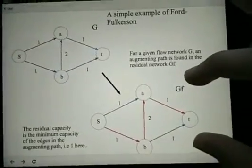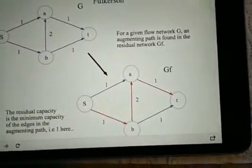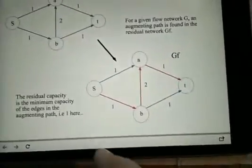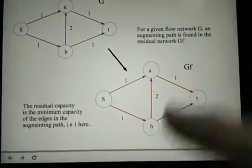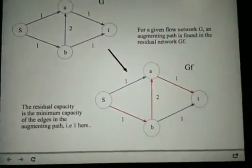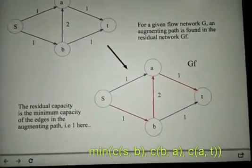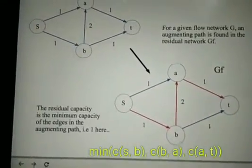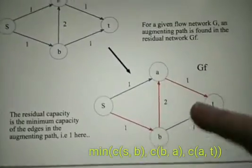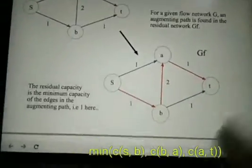The next step would be to find an augmenting path, which is any path from S to T in the network. For example, this path in red here. The next step would be to choose the minimum capacity of all the edges in your augmenting path, so the minimum out of 1, 2 and 1, which is 1.